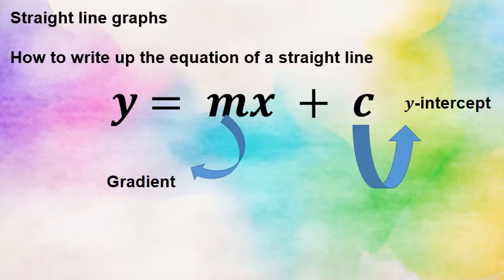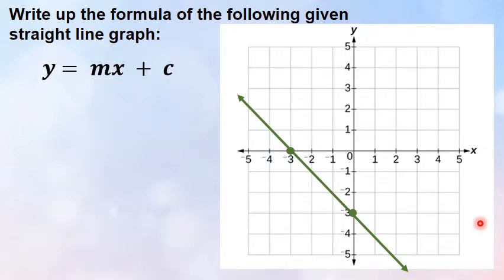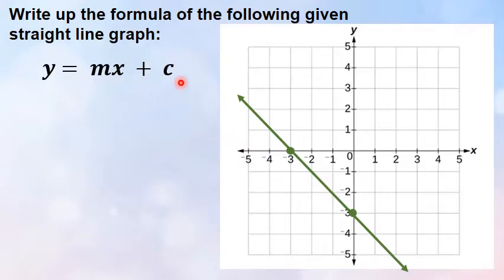That plus c or negative c at the back — write up the formula of the following graph that has been sketched. Over here you've got your Cartesian plane with two points and a graph that has been sketched, and they're asking you to generate the equation of this graph. You always start with your cookie cutter mold y is equal to mx plus c. There is a part we can read from this graph immediately — what I always call the back side of that equation is the y-intercept.